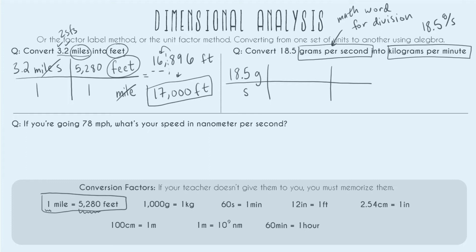We have two things to convert: grams to kilograms and seconds into minutes. It doesn't matter what order we do this in, but we have to do both conversions. Our conversion factor is 1,000 grams equals 1 kilogram, so let's start there. To cancel out grams, since it's on top, we put grams on the denominator and kilograms on the numerator. We match up the numbers: 1,000 next to grams and 1 next to kilograms.